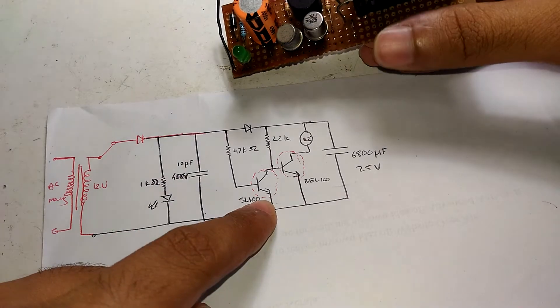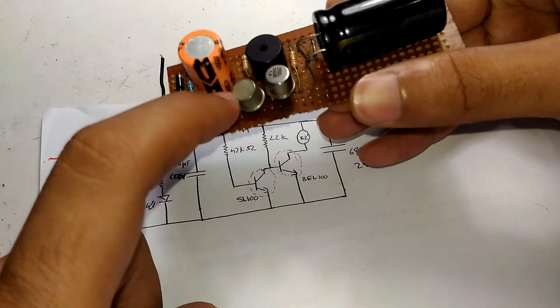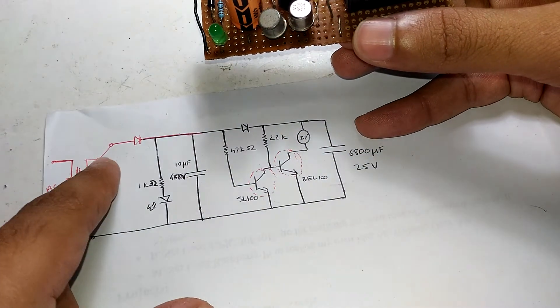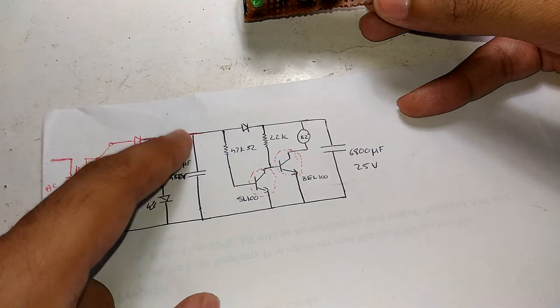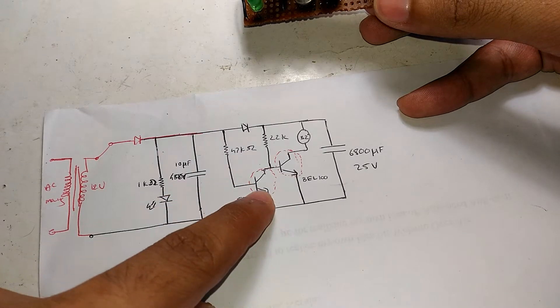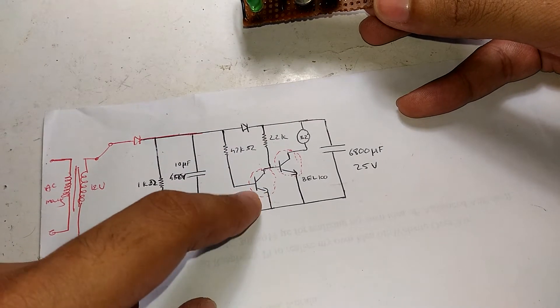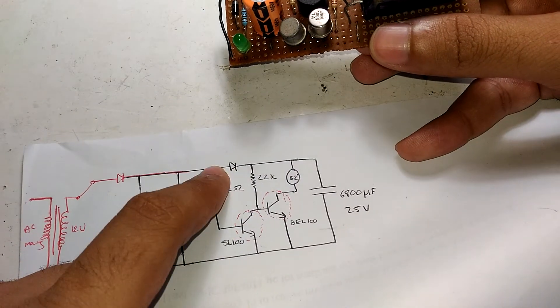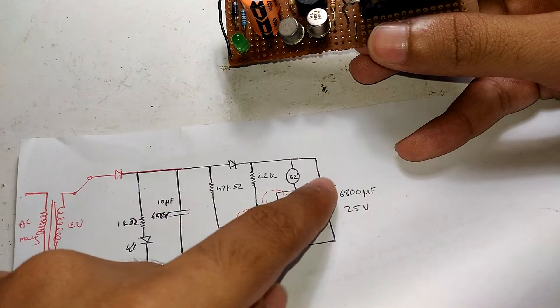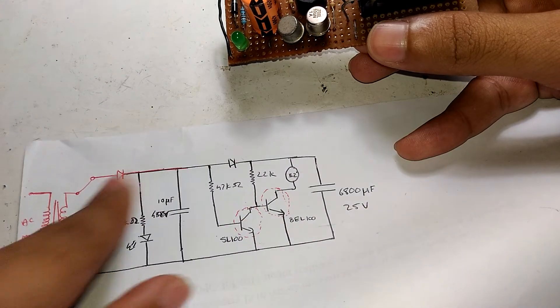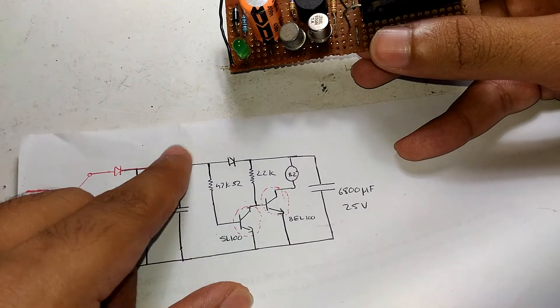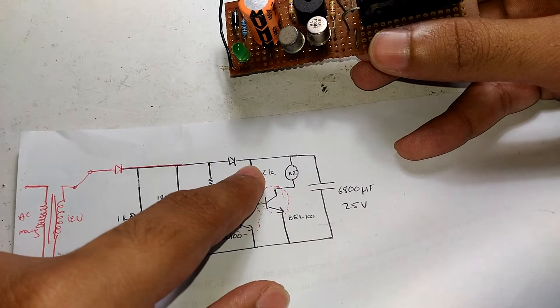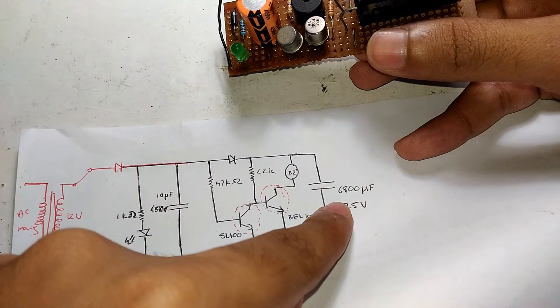Then it goes to a 47k ohm resistor to an SL100 transistor. Whenever AC mains is available, the 47k ohm resistor provides enough base current to keep that transistor on. This diode prevents the capacitor from discharging back to the rest of the circuit.